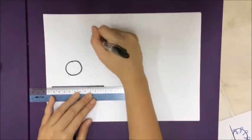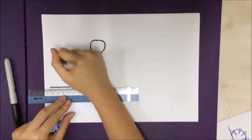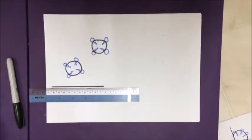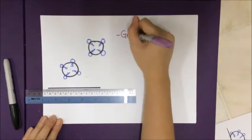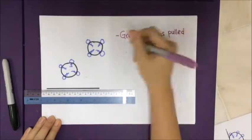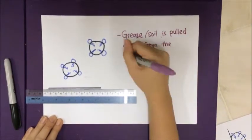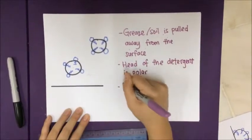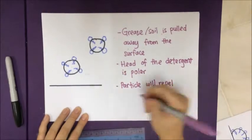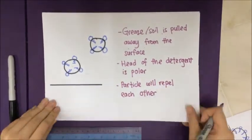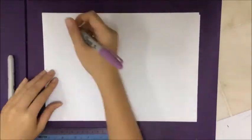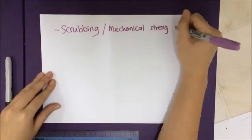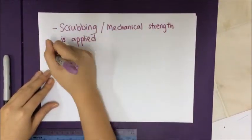The hydrophilic heads of the detergent surrounding the particle carry the same polar charge, therefore the grease particles repel each other, forming micelles. Scrubbing or mechanical force is also applied in order for the dirt to leave the surface of the clothes.